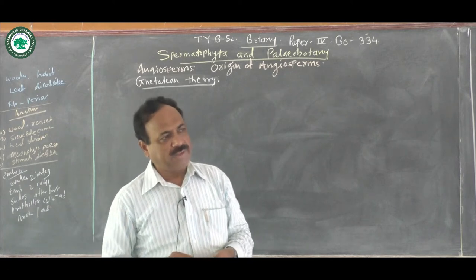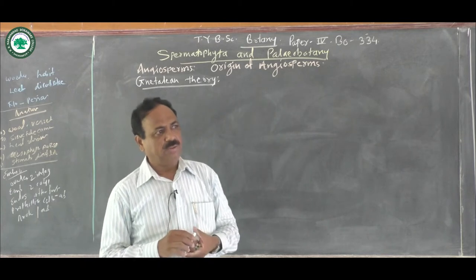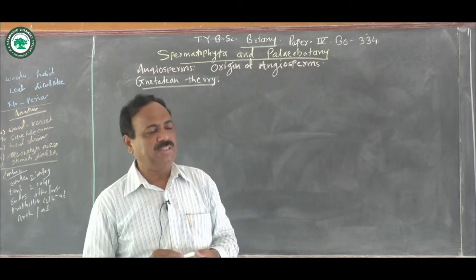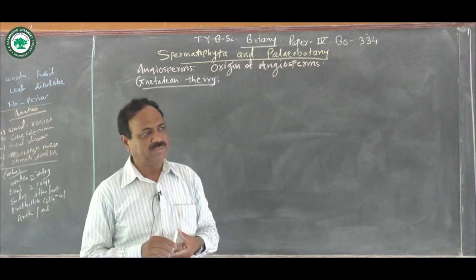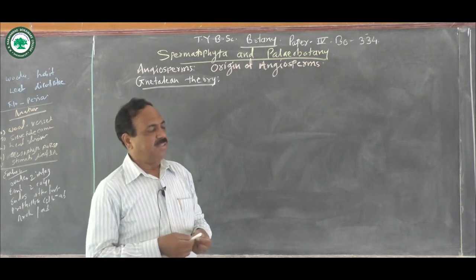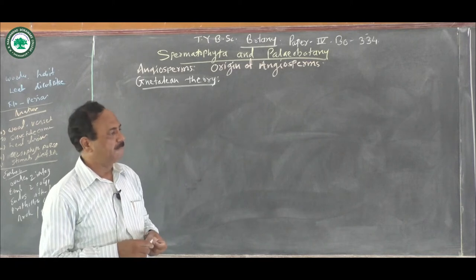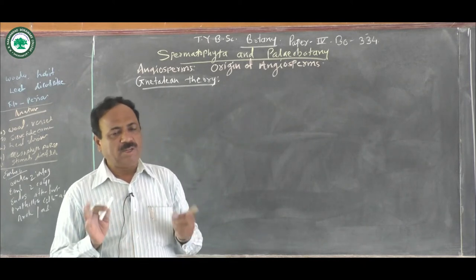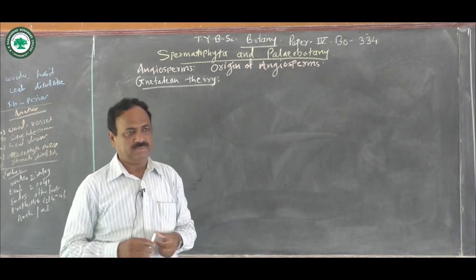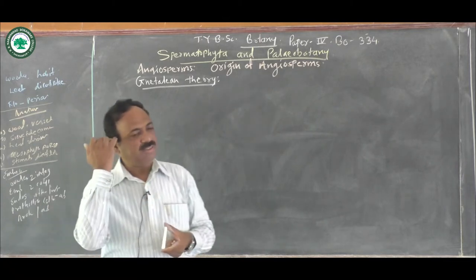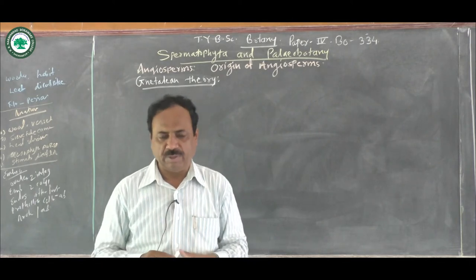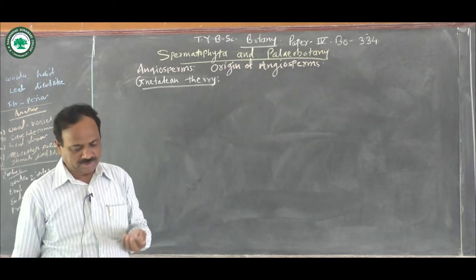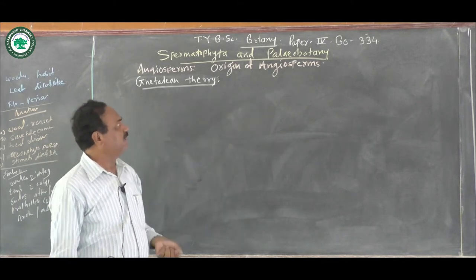Regarding the origin of angiosperms and its probable ancestors or ancestry, there are so many theories suggested by different paleobotanists, like the Bennetitalian theory, Pteridosperm theory, Nitalian theory, Caytonilaes theory, and so on. But all these are probable ancestors — they are not the direct ancestors. Because all these theories were based upon evidences or proofs obtained from different types of fossils and fossil records. Out of these, one theory is known as the Nitalian theory.